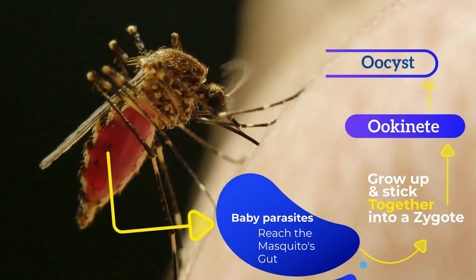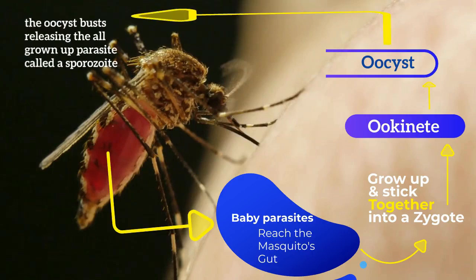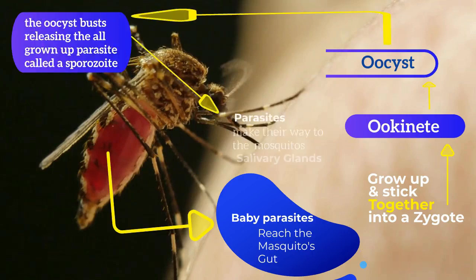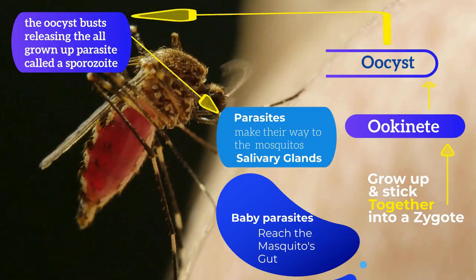this zygote then transforms into something called an oocyst. As this oocyst grows, it finally bursts and lets the grown-up version of the parasite spill out into the mosquito's saliva.